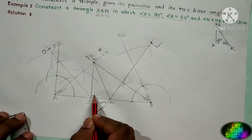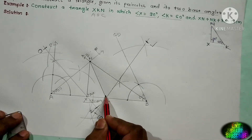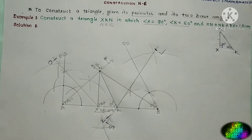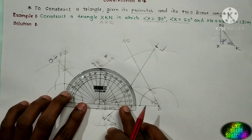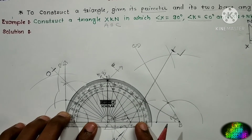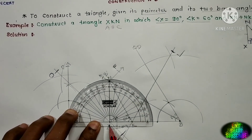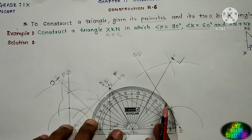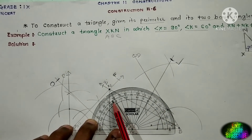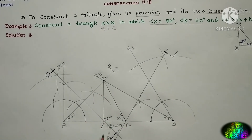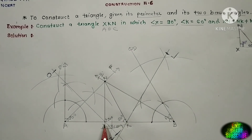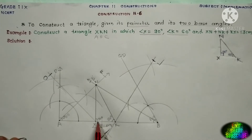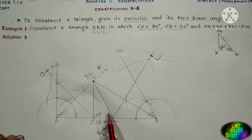Angle X should be 90 degree and angle K should be 60 degree. Let us verify using a protractor. I am getting exactly angle X equal to 90 degree — this is correct. And angle K is also exactly 60 degree. So this is the required triangle NXK. These are the two base angles: angle X equal to 90 degree and angle K equal to 60 degree, verified using protractor.